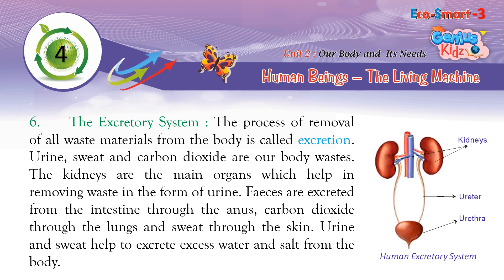The Excretory System: The process of removal of all waste materials from the body is called excretion. Urine, sweat, and carbon dioxide are our body wastes. The kidneys are the main organs which help in removing waste in the form of urine. Faeces are excreted from the intestine through the anus, carbon dioxide through the lungs, and sweat through the skin. Urine and sweat also help to excrete excess water and salt from the body.